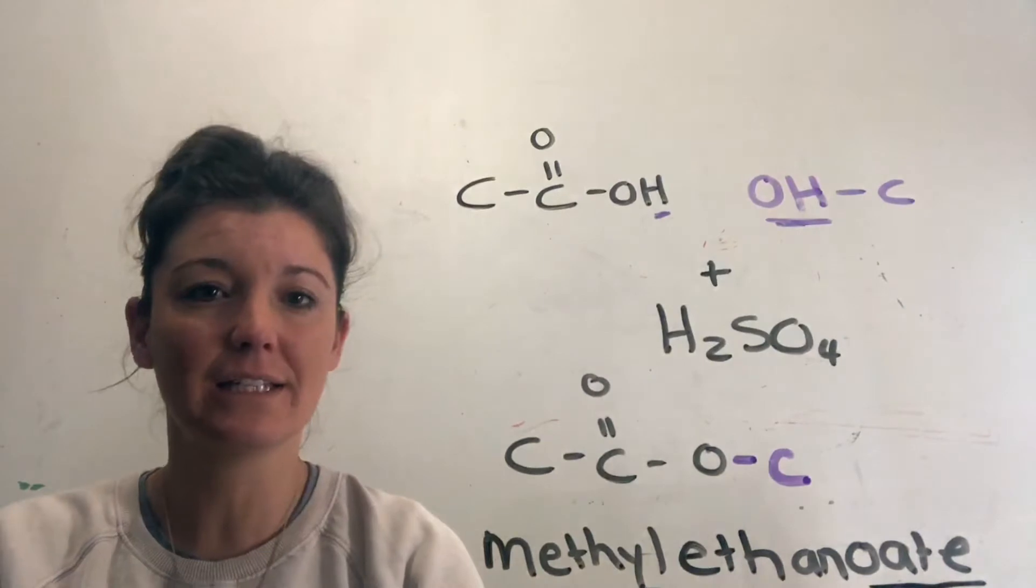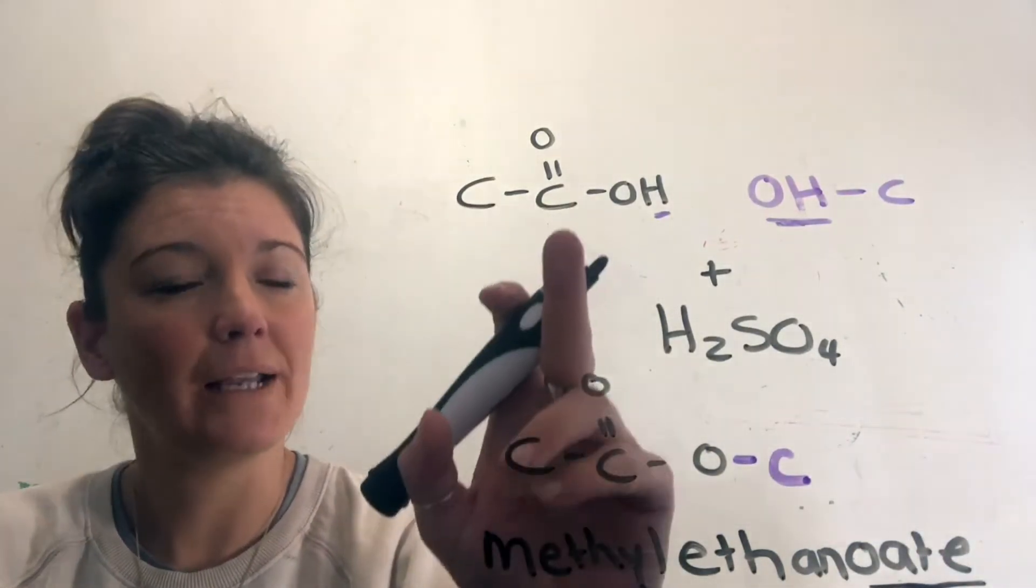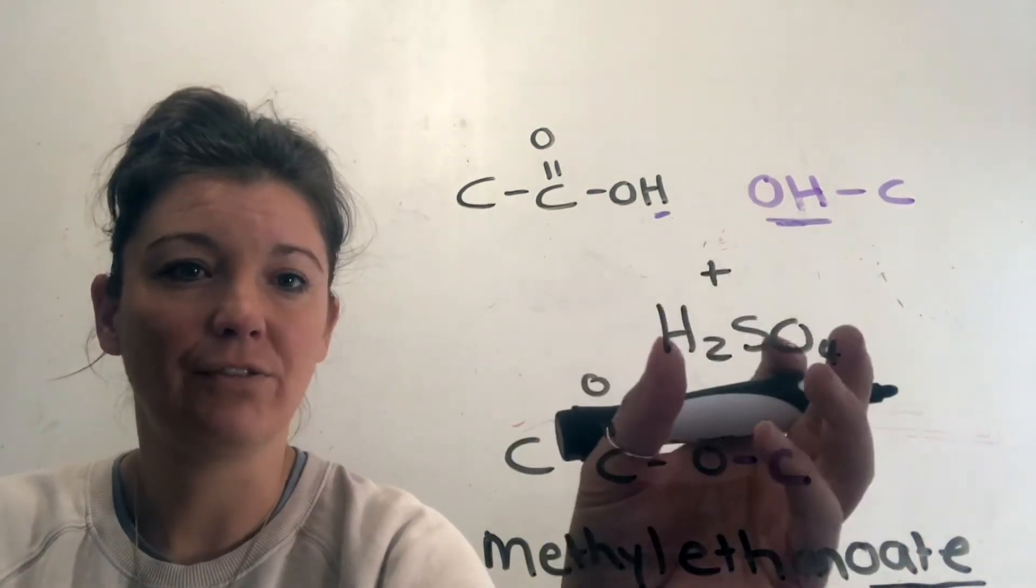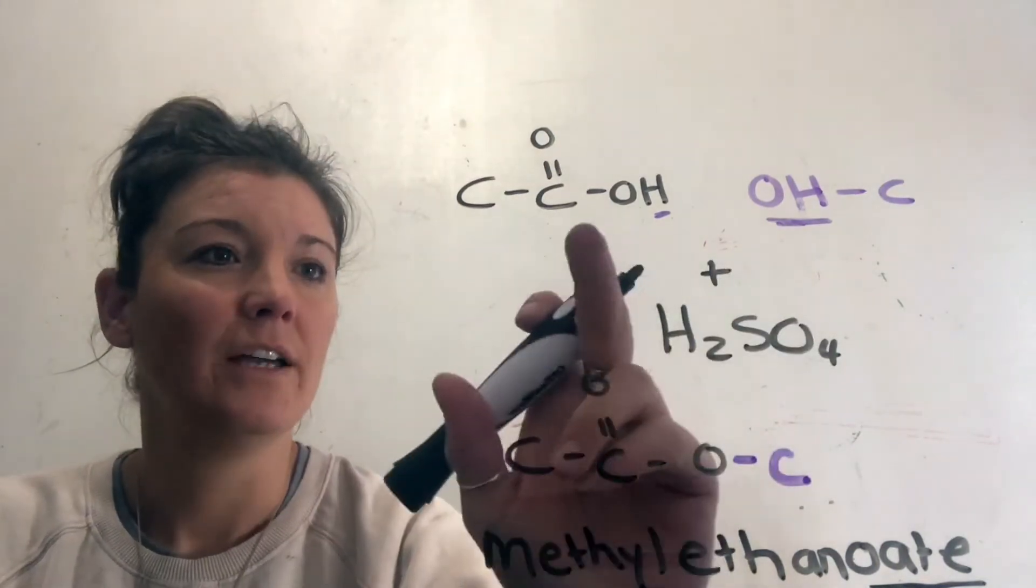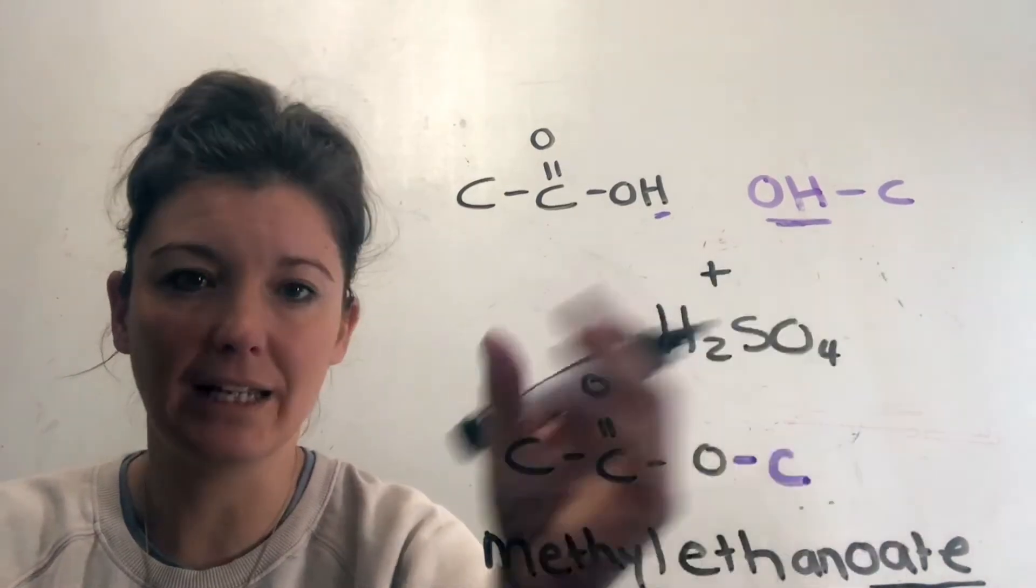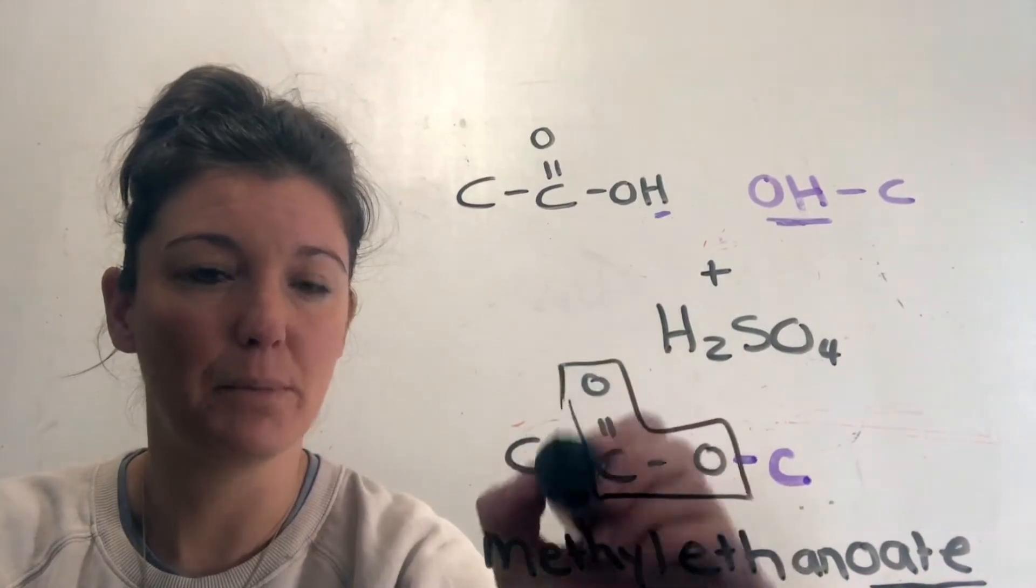So esters have these fancy naming conventions and they are made up of carboxylic acids and alcohols, and if we add sulfuric acid to it, it draws out the water, and because there's no more water, these carbons link, or the O and the C link together to form an ester bond. And this is your ester bond.